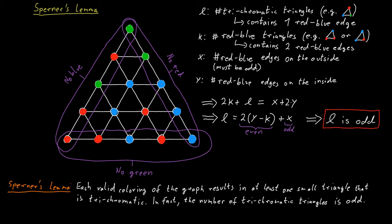So that's the end of the first proof. So we just count these different objects and somehow we get that the number of trichromatic triangles must be odd.